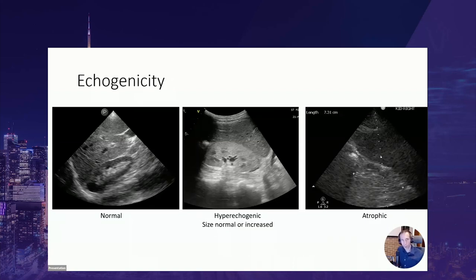You can also note the echogenicity of the kidney. In the normal image, the cortex and parenchyma are generally of lesser echogenicity than the liver. The kidney can become hyper-echogenic in abnormal states. In the center image, this is acute kidney injury due to acute tubular necrosis — after a few days the kidney can become hyper-echogenic. On the right is chronic kidney disease with the patient on dialysis, where the kidney is atrophic and hyper-echogenic, blending with surrounding abdominal fat and becoming very difficult to see.